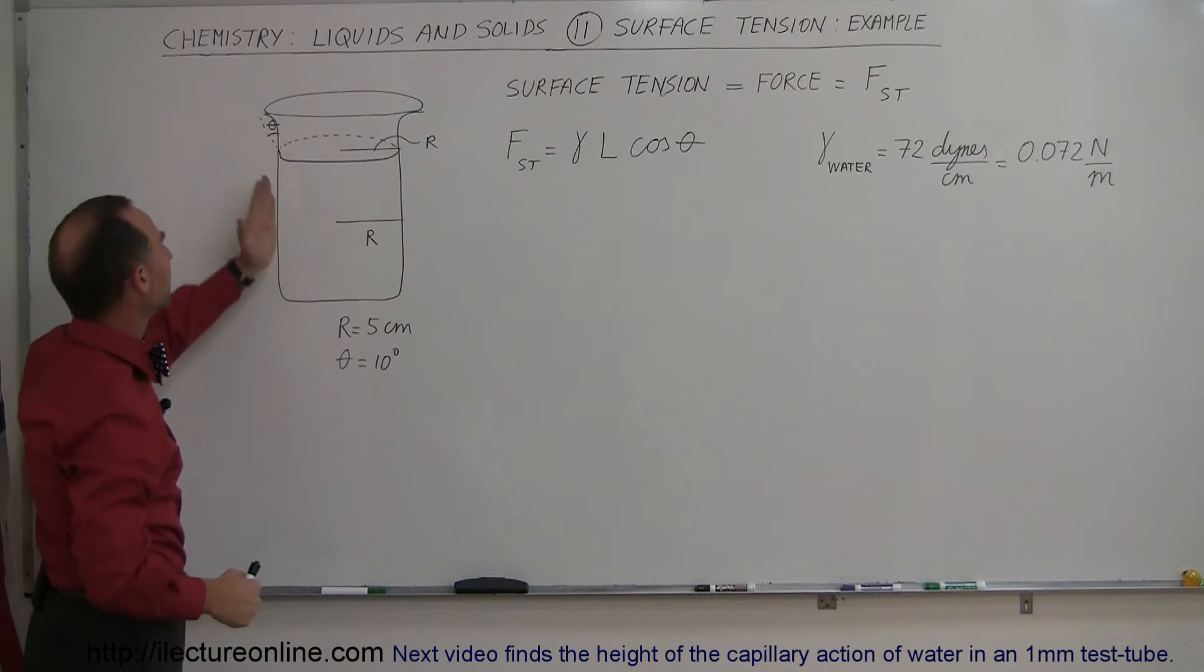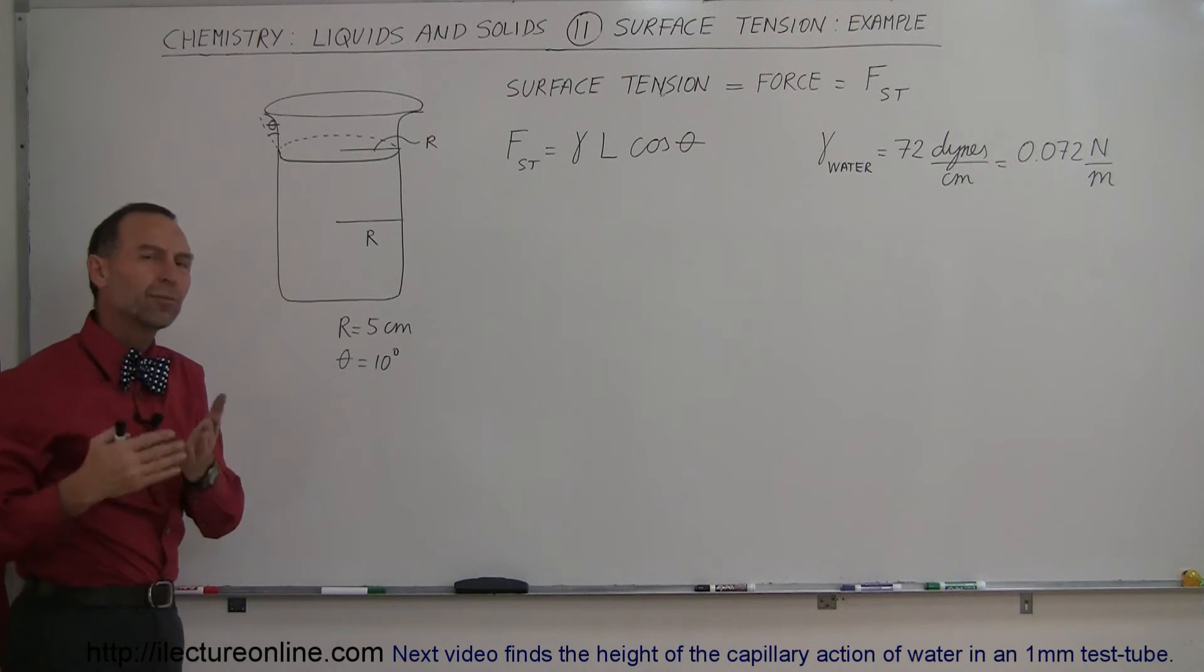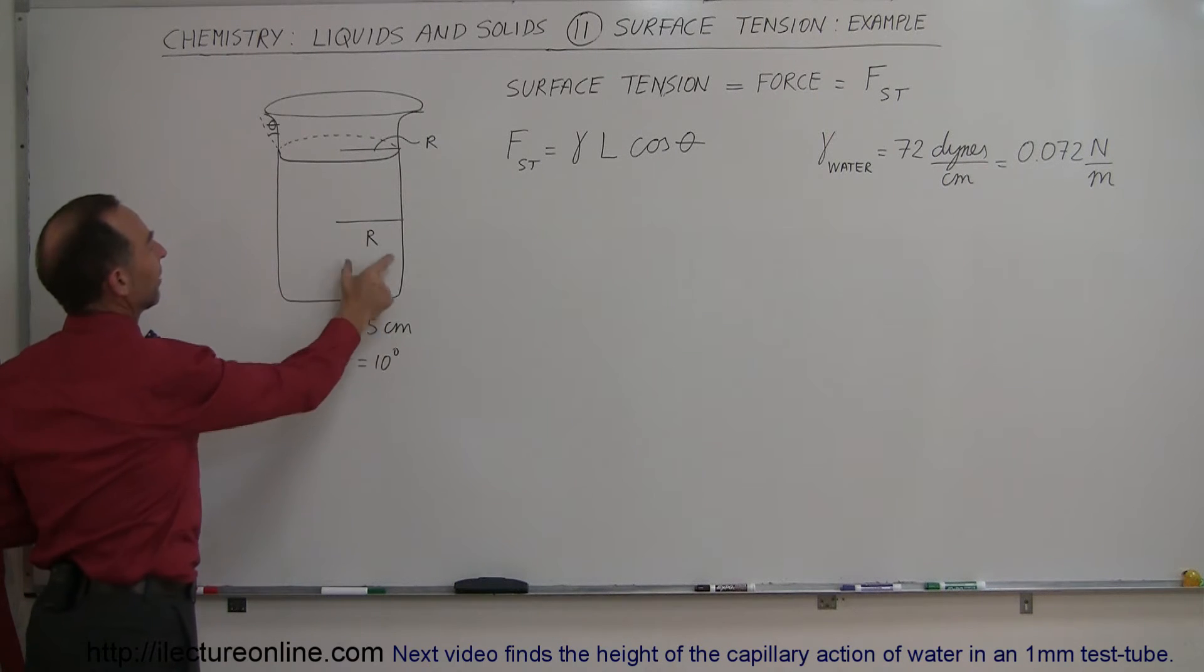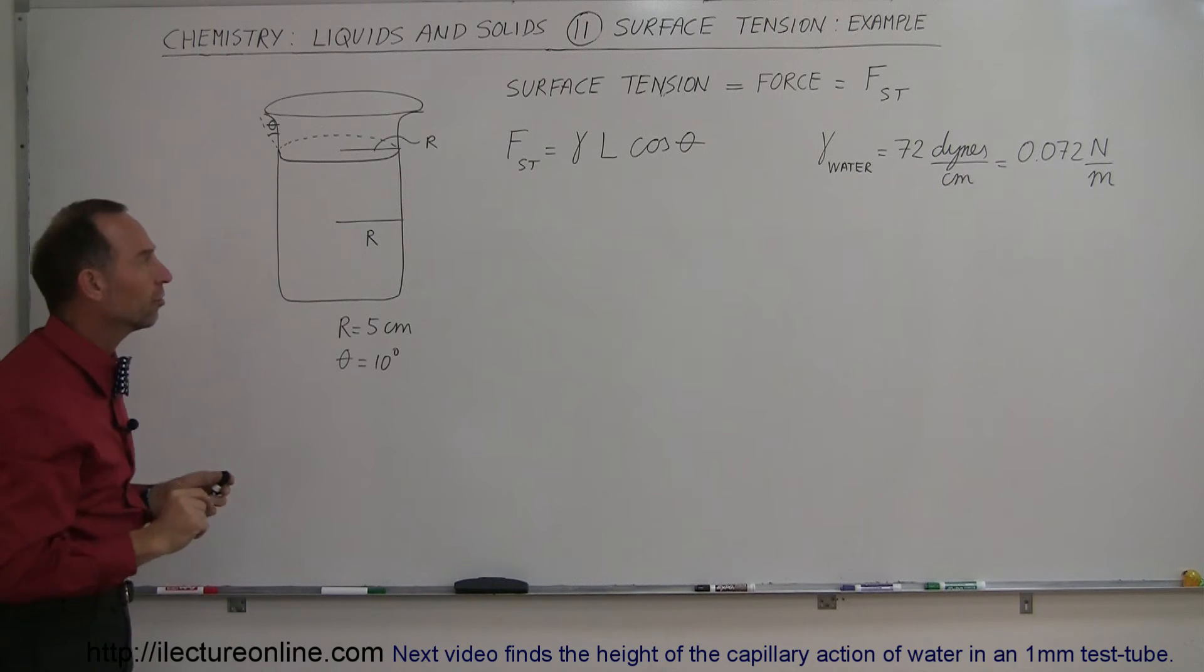And let's for example say that the angle it makes is 10 degrees. Normally it's more like 0, but let's just take 10 degrees to show the example. Let's say that the radius of the beaker is 5 centimeters, which is about 2 inches.